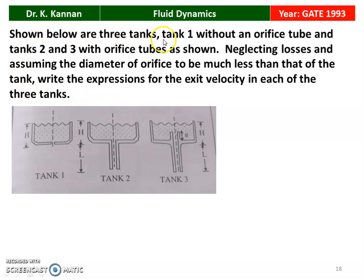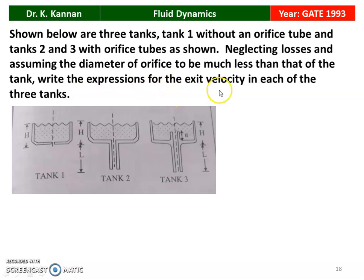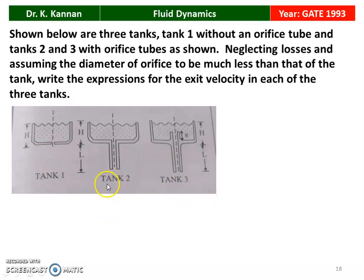Shown below are three tanks. Tank 1 without an orifice tube, and tanks 2 and 3 with the orifice tube as shown. Tank 1 has no orifice. Tank 2 has an orifice of length L. Neglecting losses and assuming the diameter of the orifice is much lesser than that of the tank, write the expression for the exit velocity in each of the three tanks.